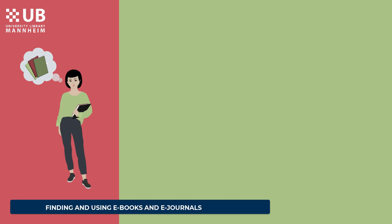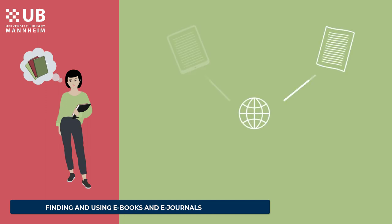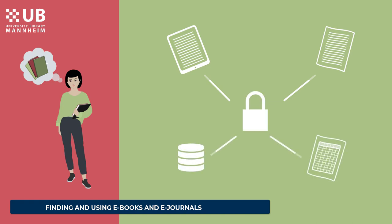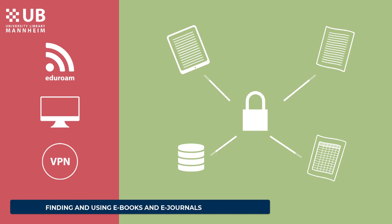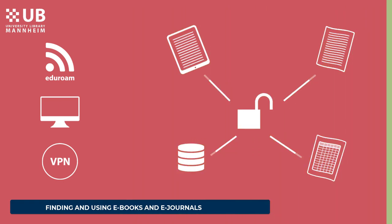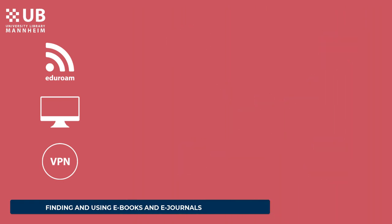Before you start searching for electronic media, it is important to keep one thing in mind. You can only access the full texts if you are on campus and connected to the wireless network Iterrom, if you are using a PC workstation in the library, or if you are connected through the VPN client from outside the campus. Only in these three ways will you be identified as a member of the University of Mannheim and be granted access to the requested titles.